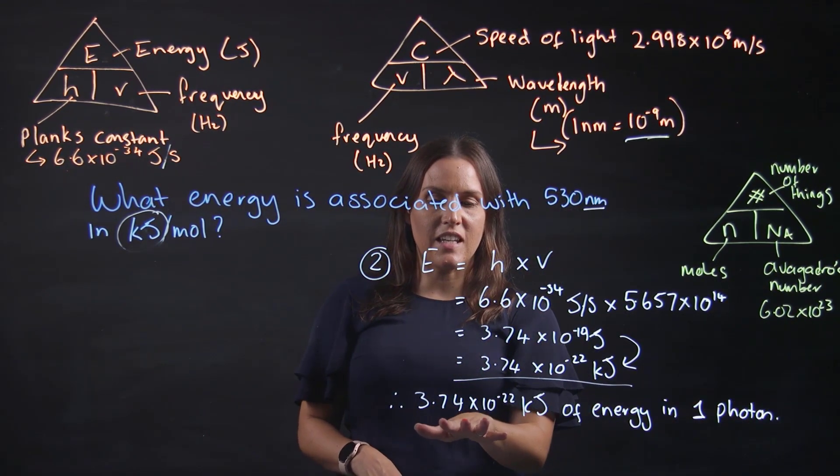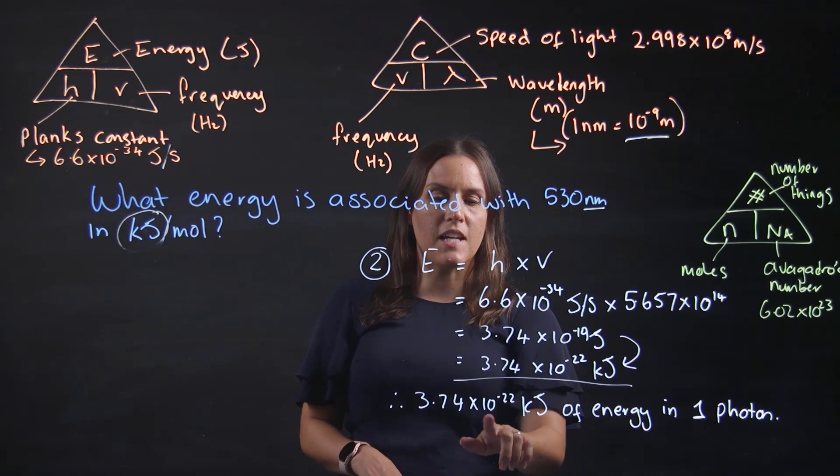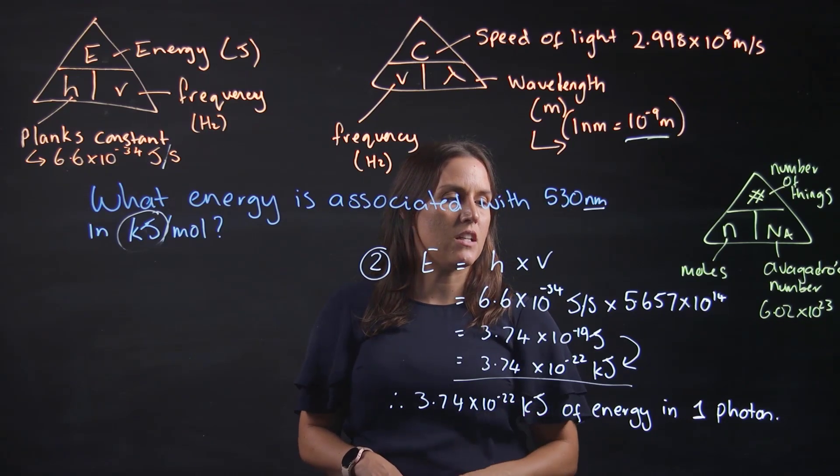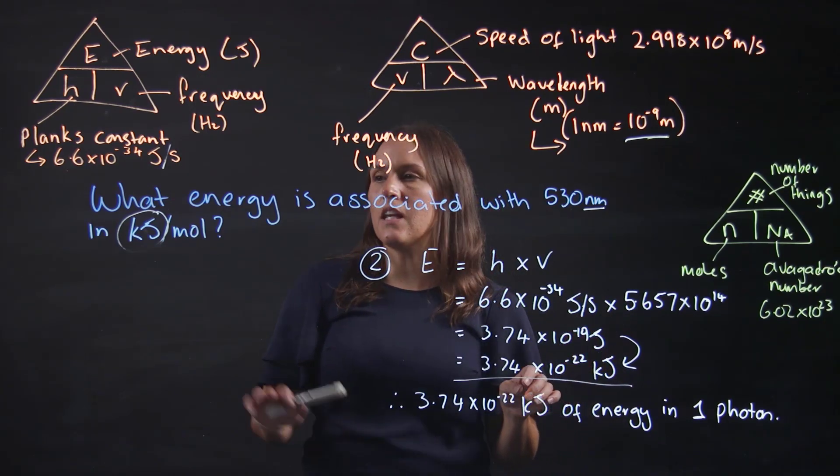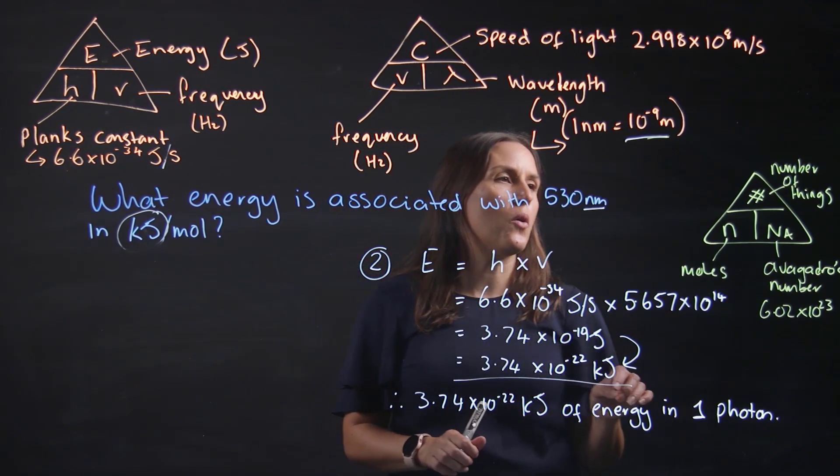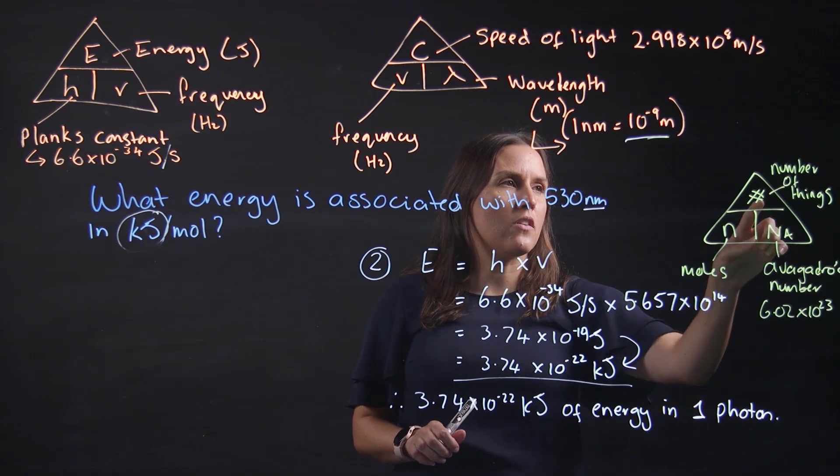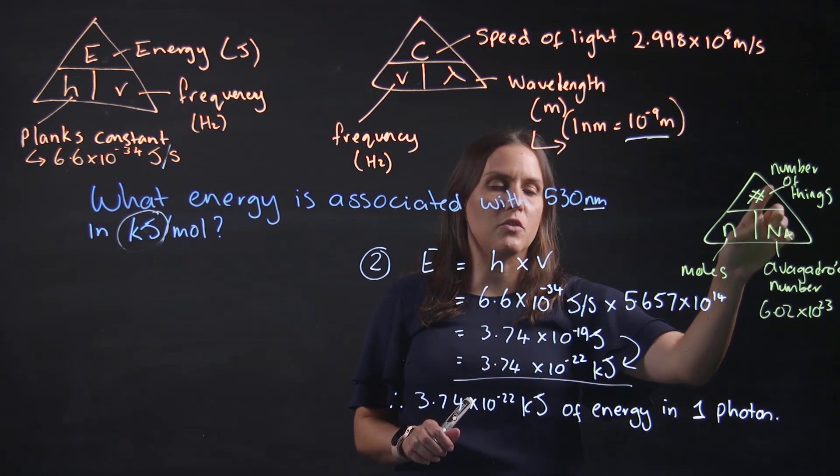So that is 3.74 times 10 to the minus 22 kilojoules of energy, and that's talking about one photon. So now we want to put it into kilojoules per mole. We want to know that this is our number of things that we're trying to find.